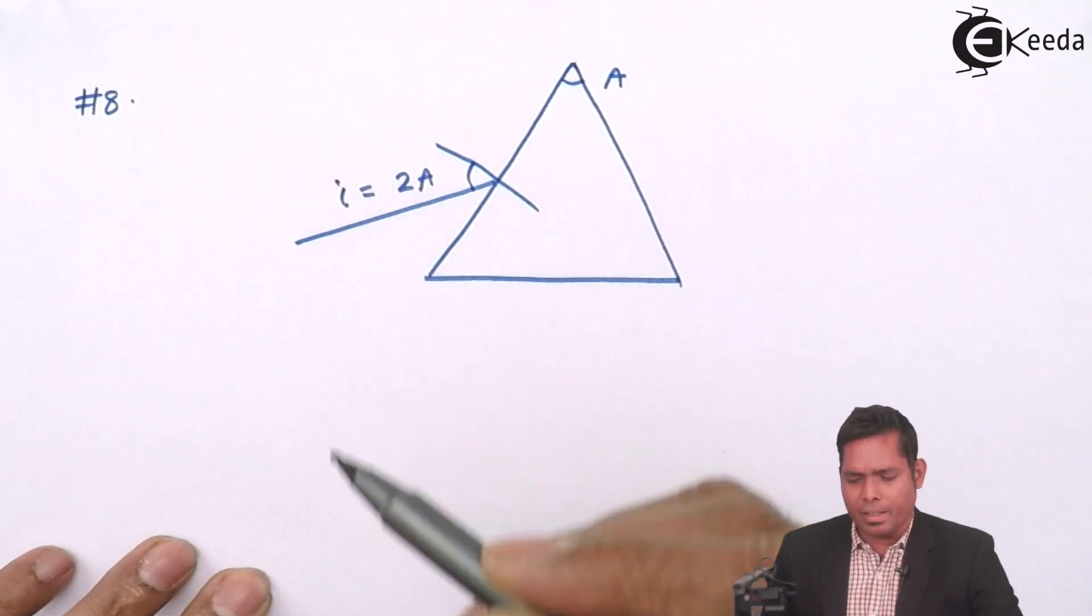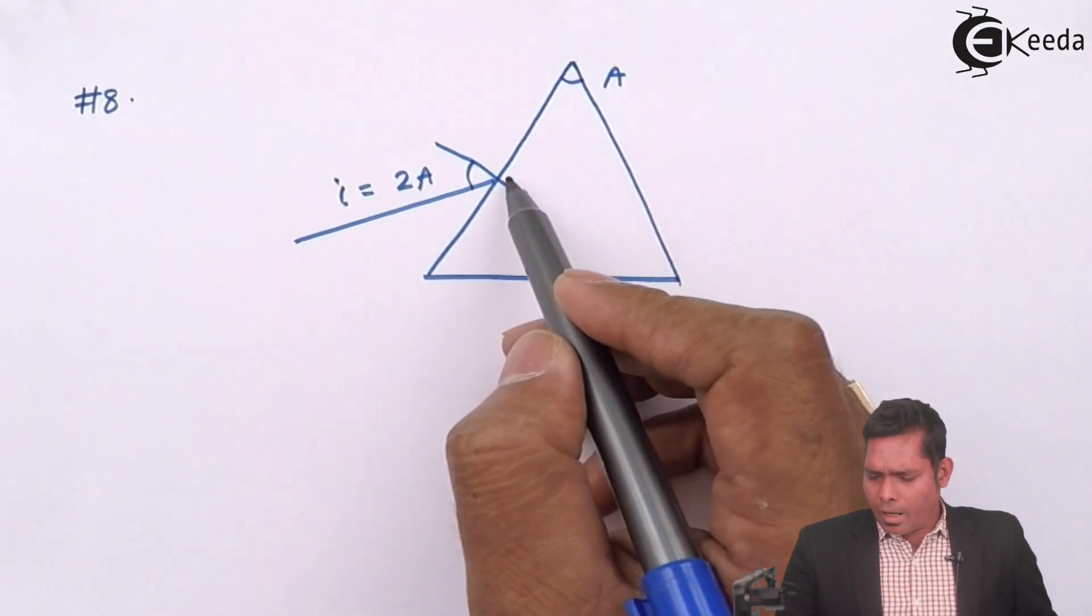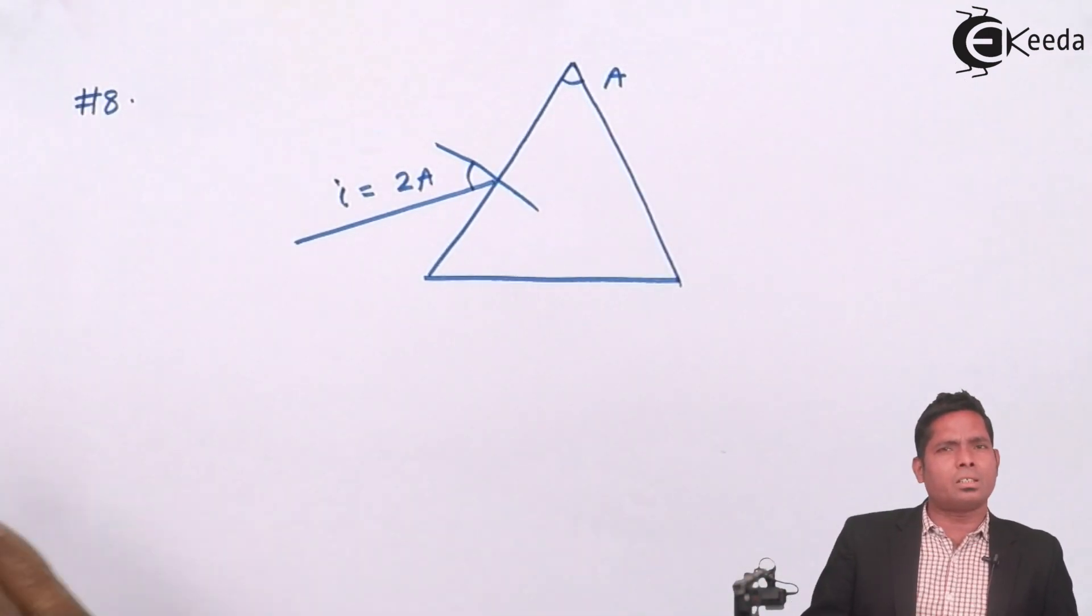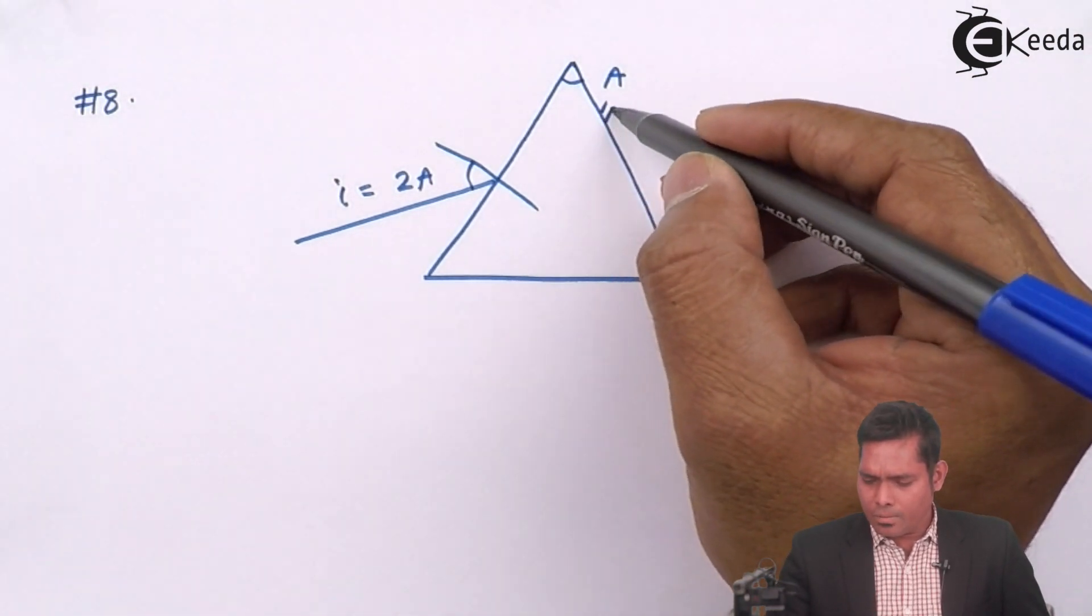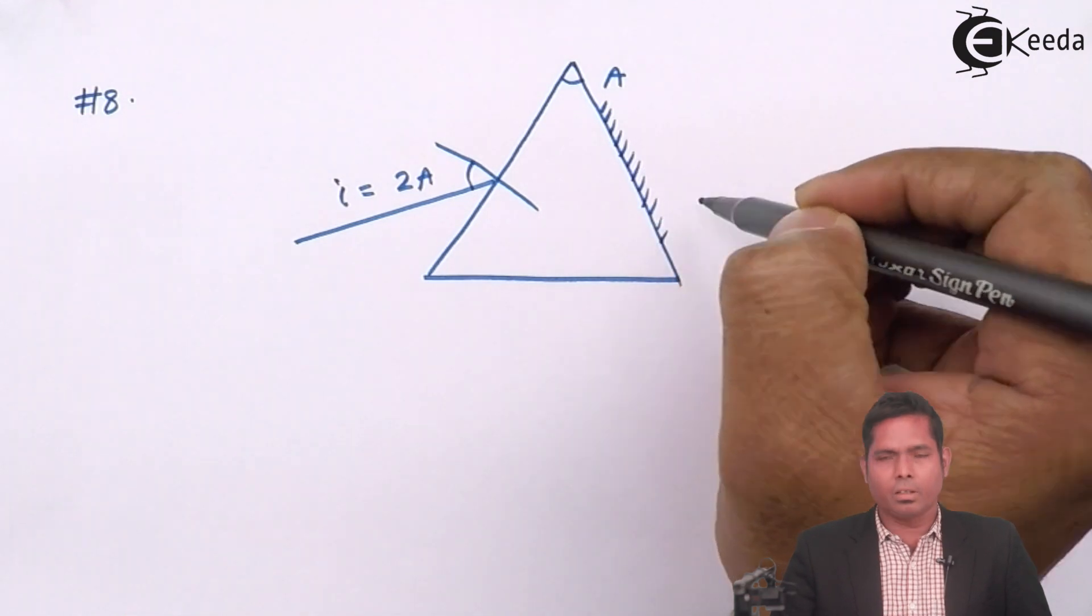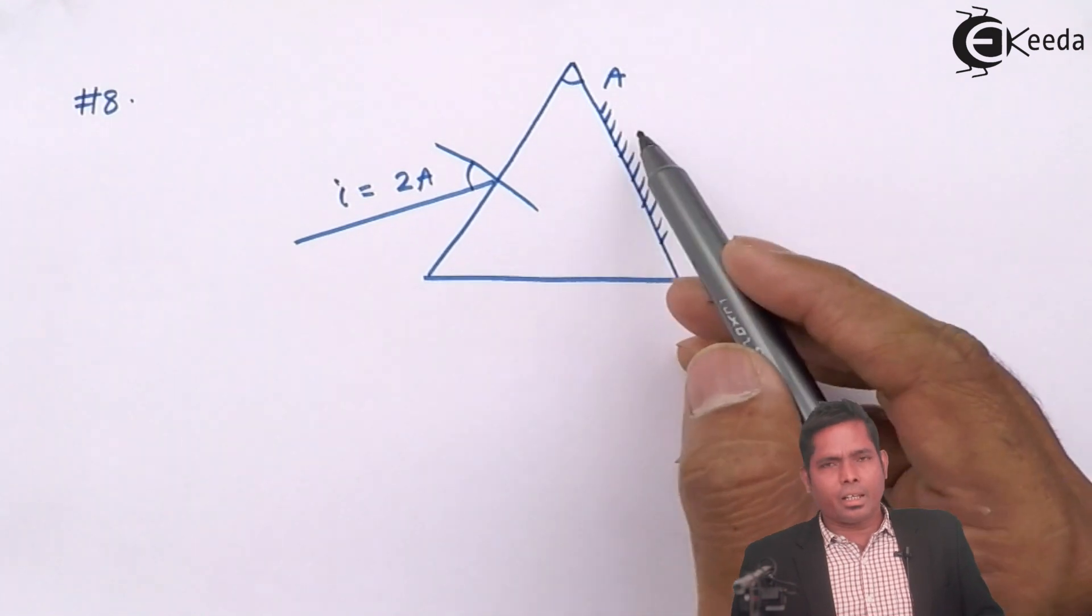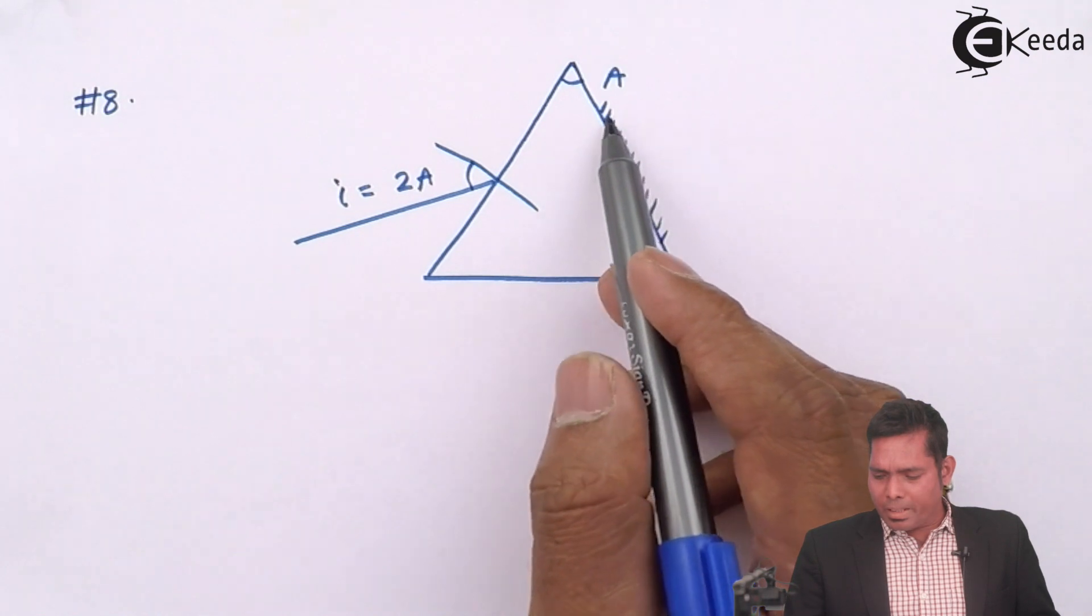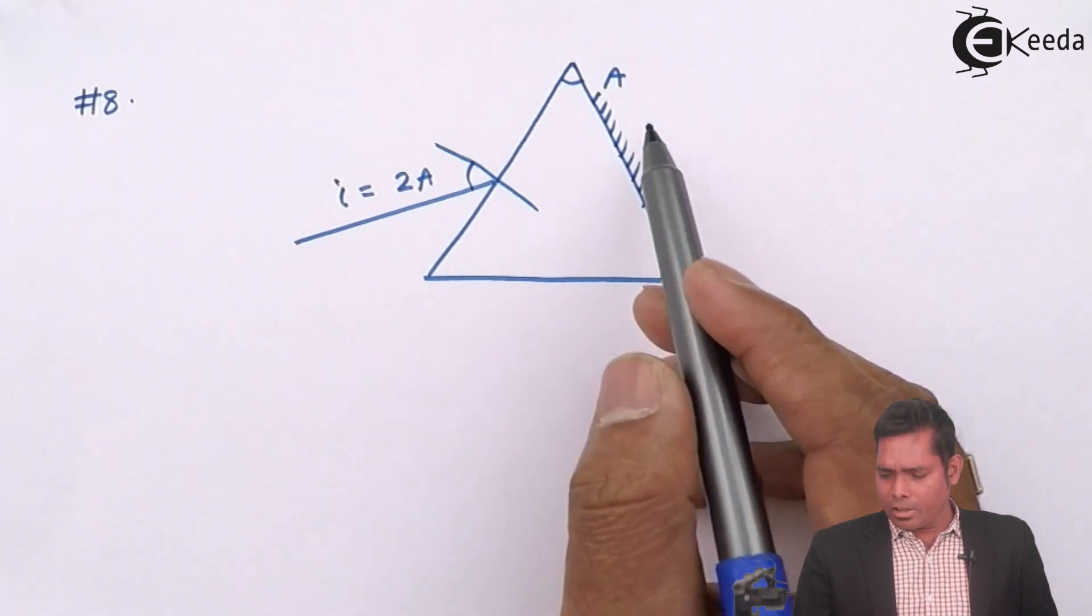I is given as 2A and it undergoes refraction and finds the other face. The second surface is silvered. It is given in the question that the surface is silvered, it behaves like a mirror. From this side, the ray cannot come out, so it will undergo reflection. The basic purpose of silvering is for reflection of the light at this face.